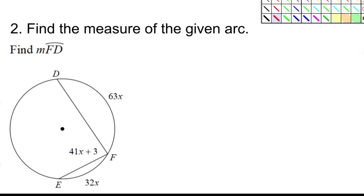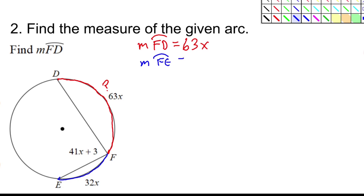Now a more difficult problem: find the measure of arc FD. I'm looking for this arc right here. I know the measure of arc FD is equal to 63X. If I knew what X is, I'd just multiply by 63, but I don't know X yet. I also know arc FE — the measure of arc FE is equal to 32X. And it looks like DE is a minor arc, so the measure of arc DE...